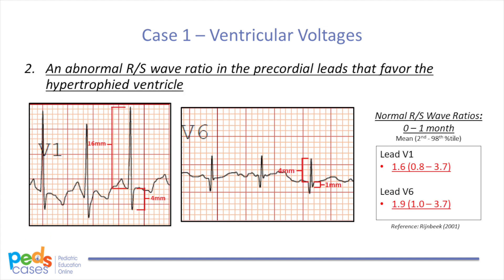The next major finding we look for in ventricular hypertrophy is an abnormal R-to-S wave ratio in the precordial leads that favor the hypertrophied ventricle. You measure the R and S-waves typically in V1 and V6, then divide the R-wave by the S-wave to get a ratio. Based on the Rinbeek tables, the normal R-to-S wave ratio from 0 to 1 month in V1 is 0.8 to 3.7, and 1.0 to 3.7 in V6. In our patient, the R-to-S wave ratio in both leads V1 and V6 is 4, which is slightly above the upper limit of normal for age in both leads. This finding does not fulfill criteria for ventricular hypertrophy, however, as the ratios do not favor a specific ventricle. The R-to-S wave ratios are slightly high in both the right and left-sided leads and are therefore nonspecific to either ventricle.